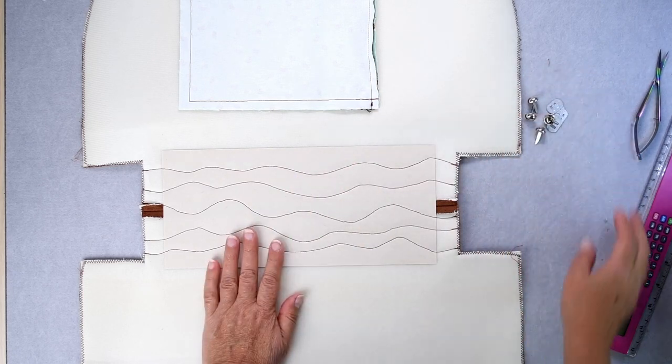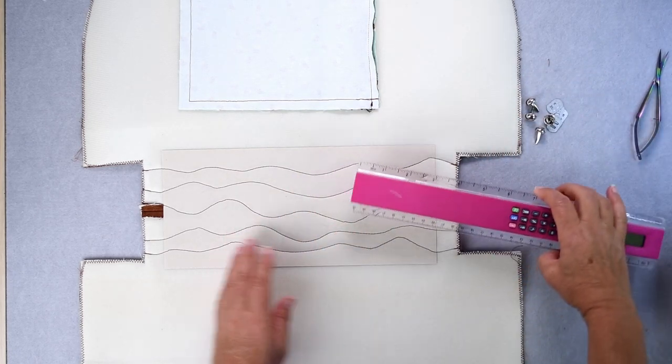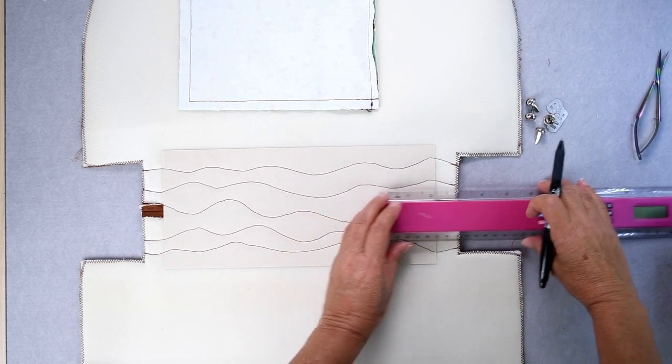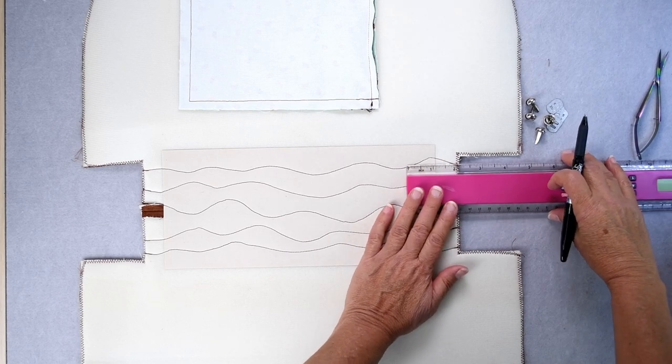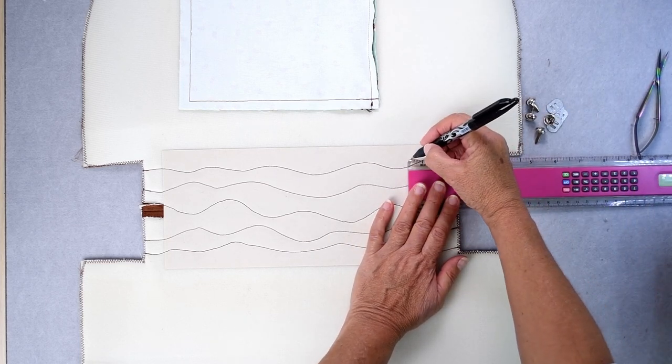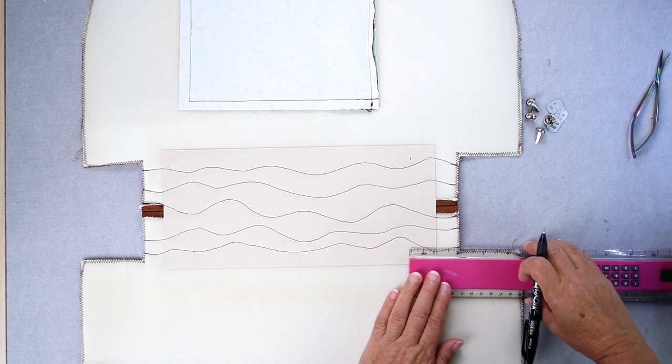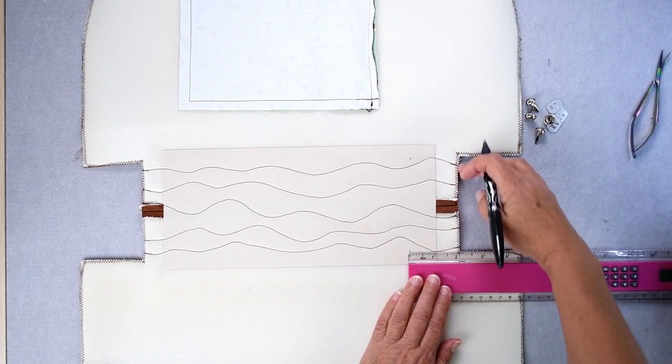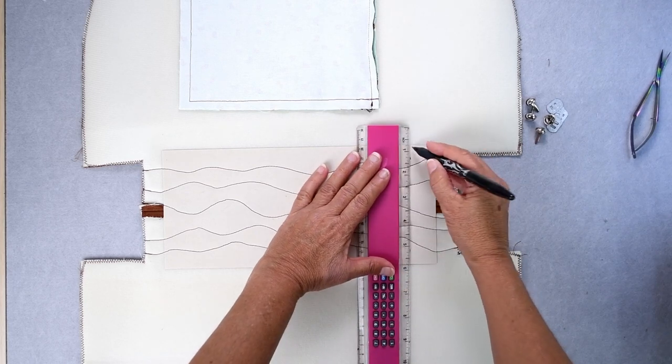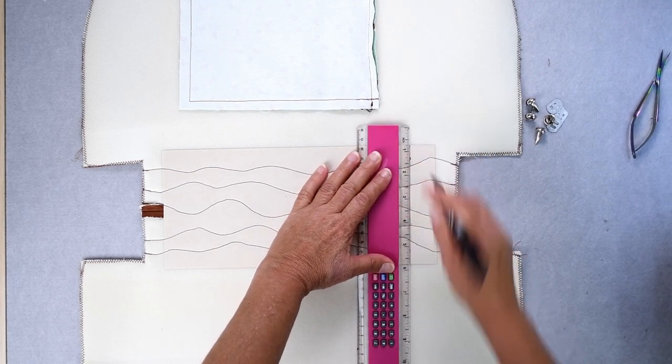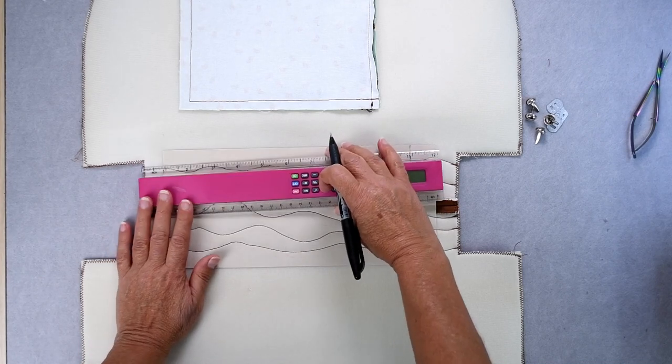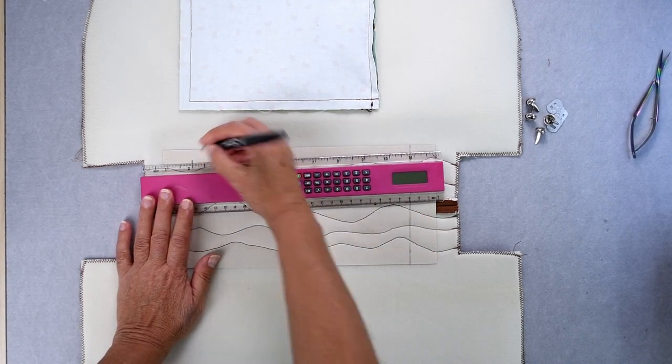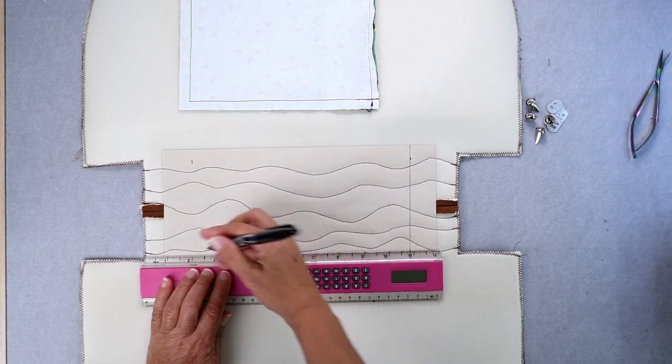To do that I'm going to draw a line two inches or five centimeters from each end, the short where the cutout is there. Do the same on this side, two inches or five centimeters.